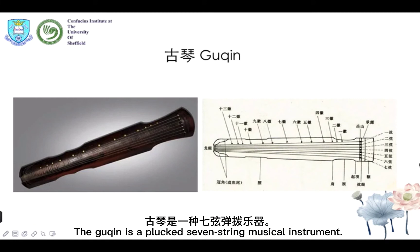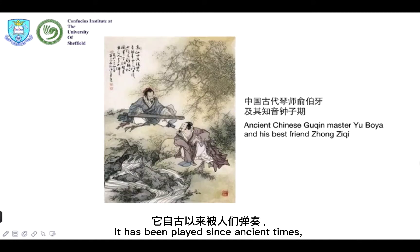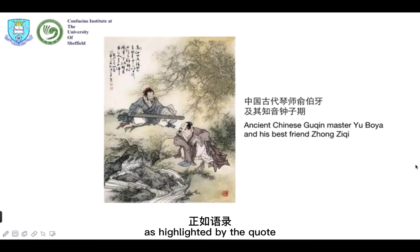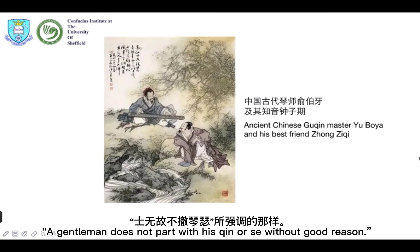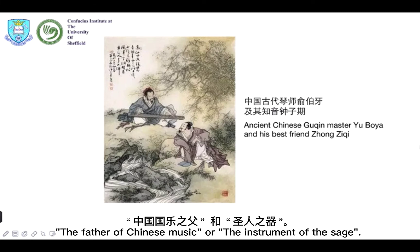The gu qin is a plucked 7-string musical instrument. It has been played since ancient times and has traditionally been favored by scholars and literati. As highlighted by the quote, 'a gentleman does not part with his qin or se without good reason.' It is sometimes referred to as the father of Chinese music or the instrument of the sage.